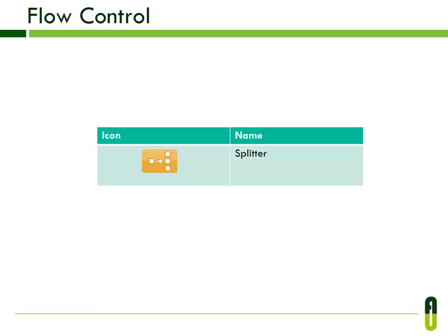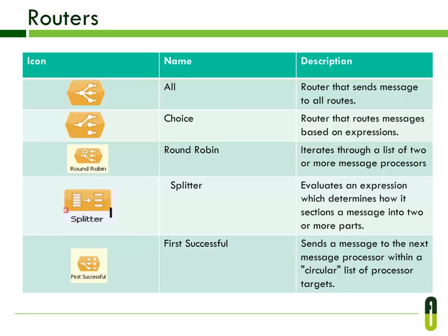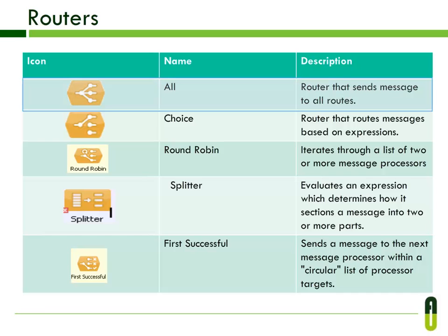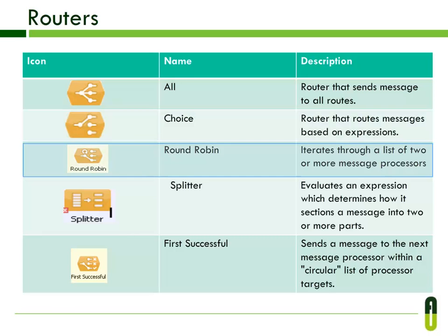Flow control refers to message processors that control the destination of messages in a flow. The Splitter uses an expression to split a message into pieces, all of which are then sent to the next message processor. The All router sends the same message to multiple targets. The Choice router sends a message to the first message processor that matches, routing messages based on expressions. Round robin iterates through a list of two or more message processors, jumping back to the start when it reaches the end.